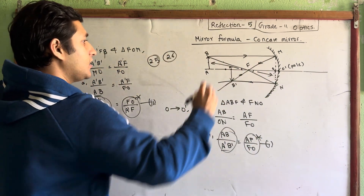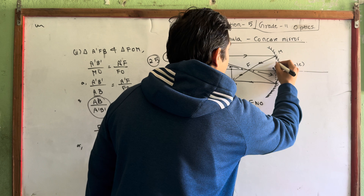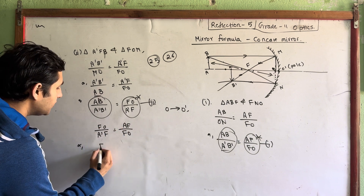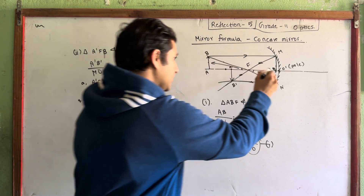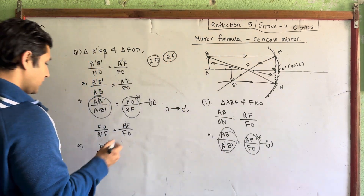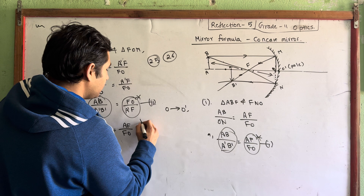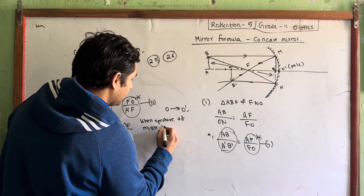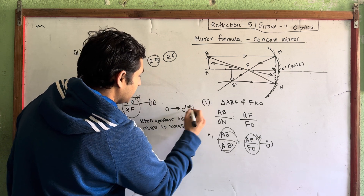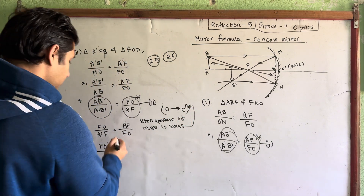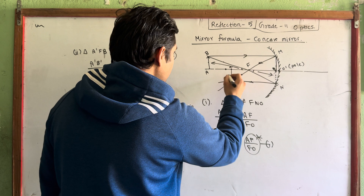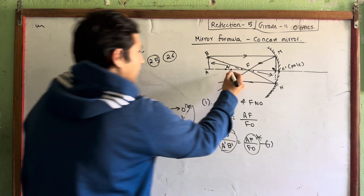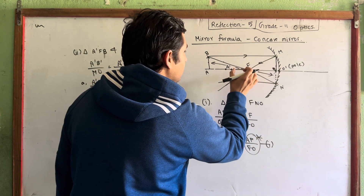So this is A-dash, and this is O, and this is O. So now F is O, and F is O. When the aperture of the mirror is small, this is A-dash. So A-dash-F — I will use A-dash-F, A-dash-F. You can use this distance — this little distance, minus distance.